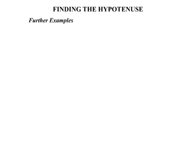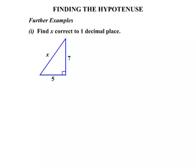We'll do some further examples. We're asked to find x, this time correct to one decimal place. So there's our x, it's the hypotenuse, so we're starting with that. We write that x squared equals, and the two sides are 5 and 7. So we can write that it equals 7 squared plus 5 squared.